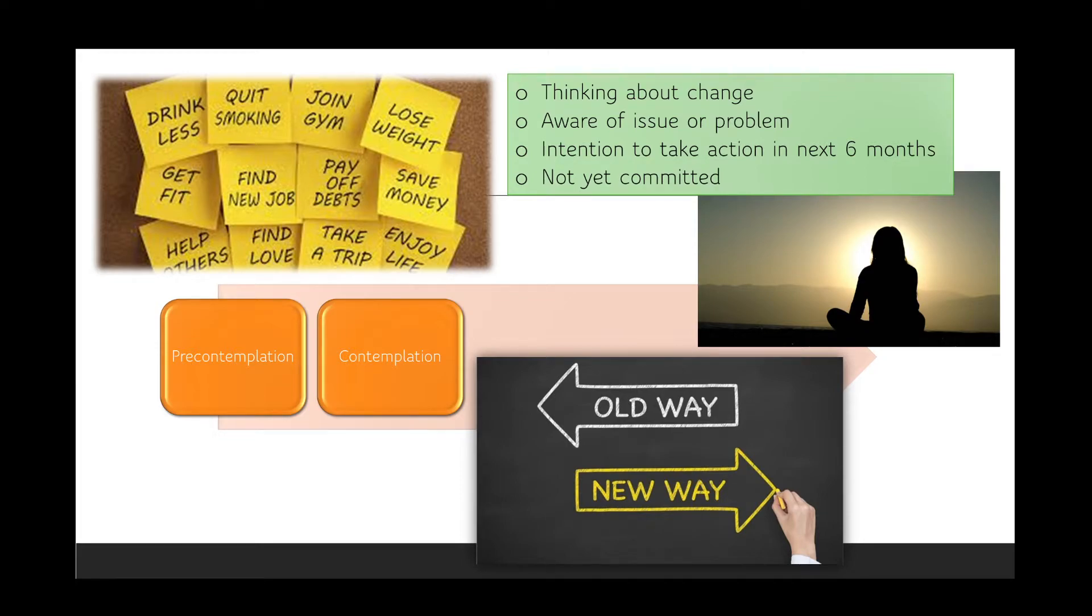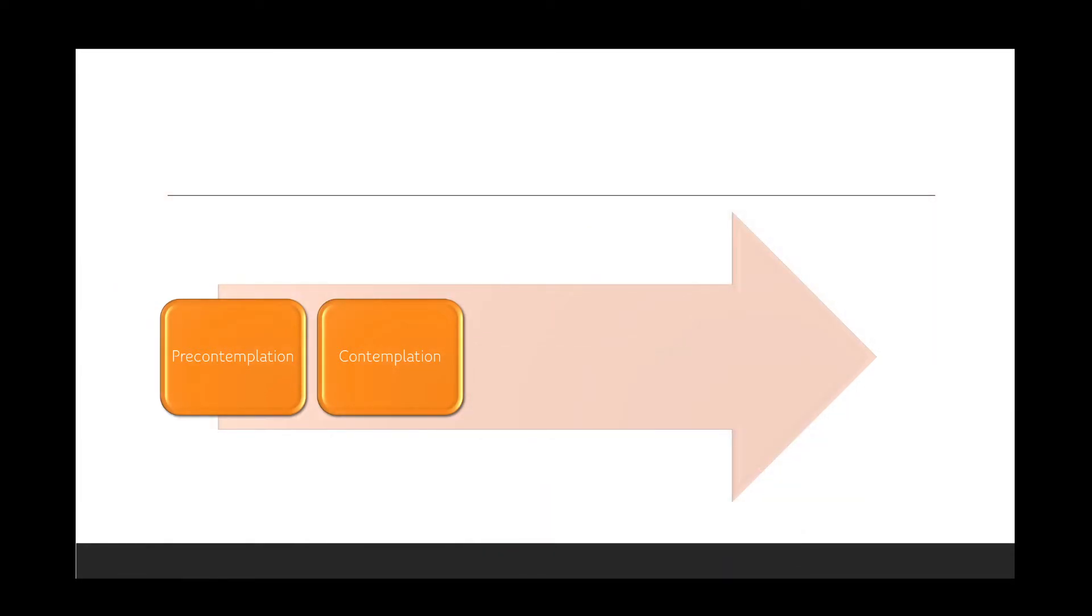This is important for us to understand because the person in contemplation might need our support in health positive ways. We are always attempting to increase a person's health literacy. In the contemplation phase, this might be encouraging them to think about their behaviors in ways that are more health positive. This might be a good spot to examine their thoughts and ideas using the health belief model to see in their thinking where their benefit and barrier balance is. Efforts and attempts to increase their perception of the benefits and decrease or eliminate the barriers are generally effective ways to propel people from contemplation into the next phase of this model.